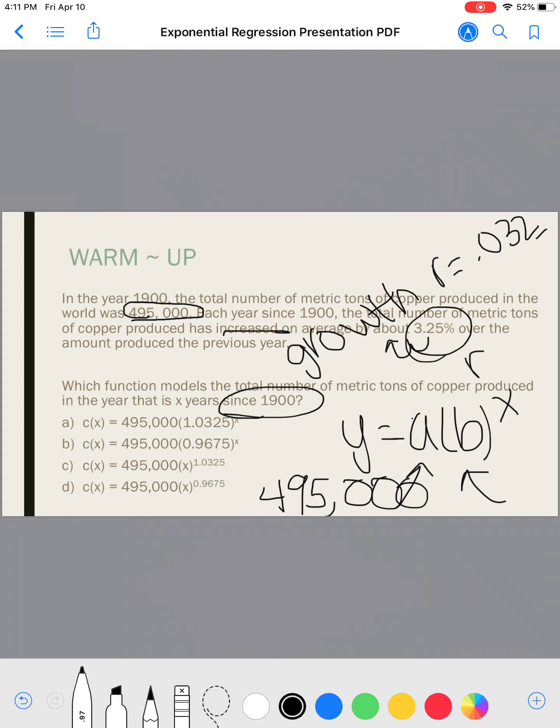And then I don't want the R value, I want the B value. So since this is exponential growth, I know I'm going to add 1 to this number. So my B value is going to be 1.0325. All right. And which one shows an A value of 495,000 and a B value of 1.0325? A. If this said this was exponential where it was decreasing every year, then the answer would have been B. And then C and D both don't even make any sense because those aren't exponential functions.